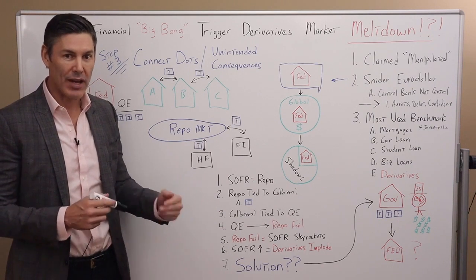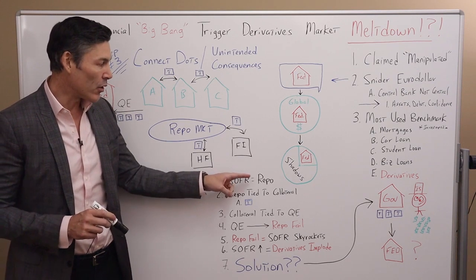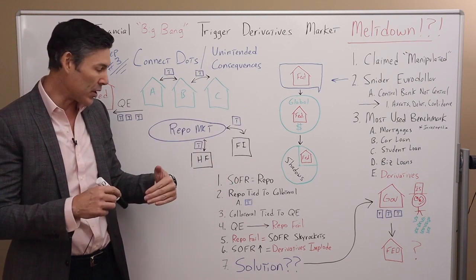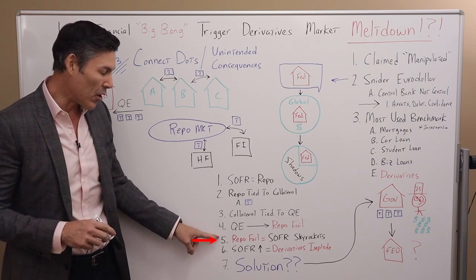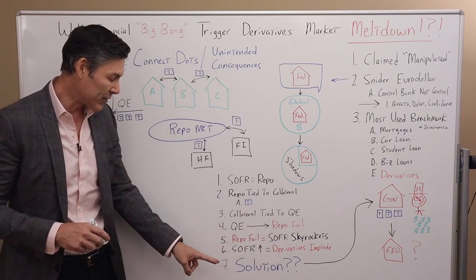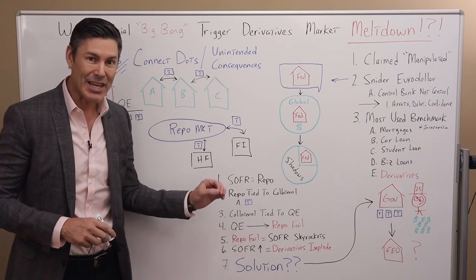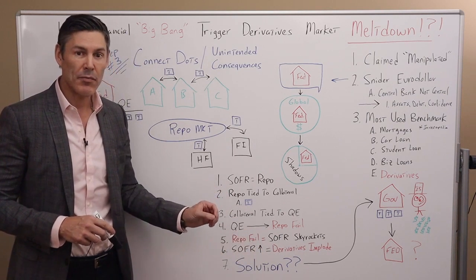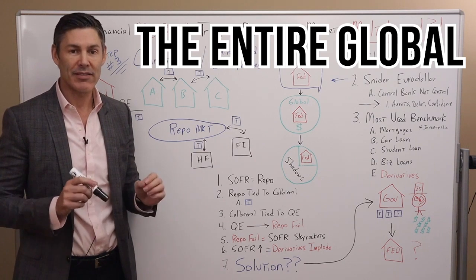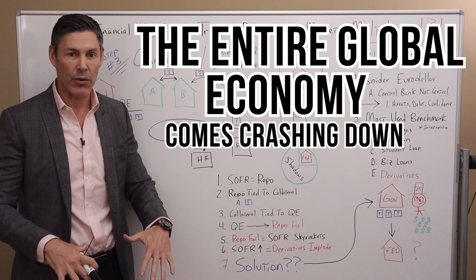The more quantitative easing the Fed does, the closer it takes us to repo market fails — where transactions don't go through — or to one of those giant repo spikes, the repo market imploding. If the repo market implodes, then SOFR — the interest rate — skyrockets. If SOFR skyrockets, the derivatives market implodes. If the derivatives market implodes, the entire global economy comes crashing down.